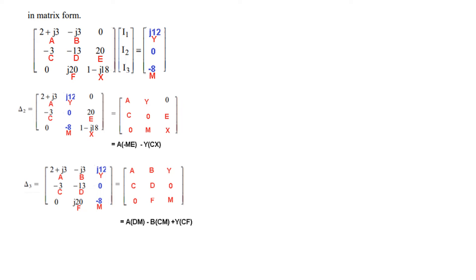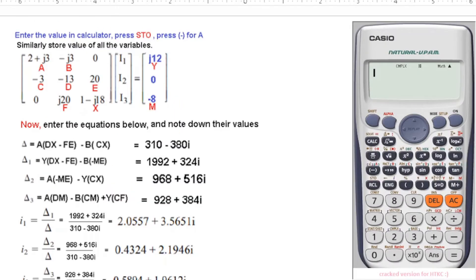Now we will add these values in the calculator. For that, we have to enter the value in the calculator and press store, then press the value of the variable. We have all these equations and we have to enter all the equations one by one in the calculator. We will get the answer as shown here. I am just showing it so you know these are the answers expected, but we will see the calculator working. Finally, the current can be calculated: delta 1 divided by delta, and same for I2 and I3. Let's see the calculator.